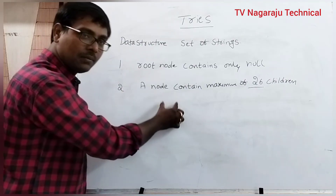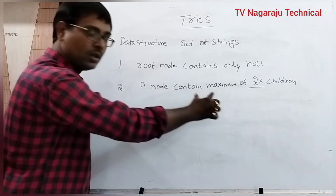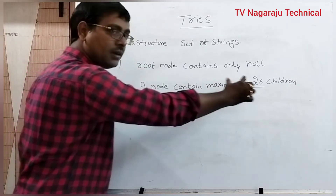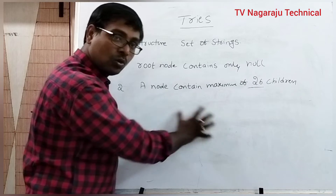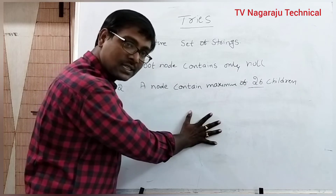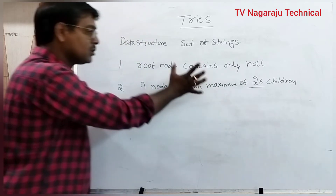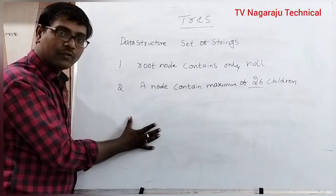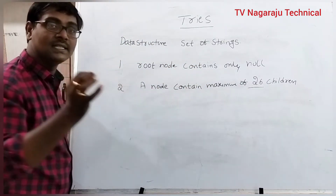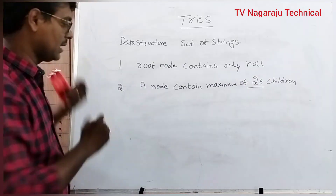Like A for apple, B for ball, C for cat, D for duck, and so on — a total of twenty-six strings. So they have a maximum of twenty-six children.